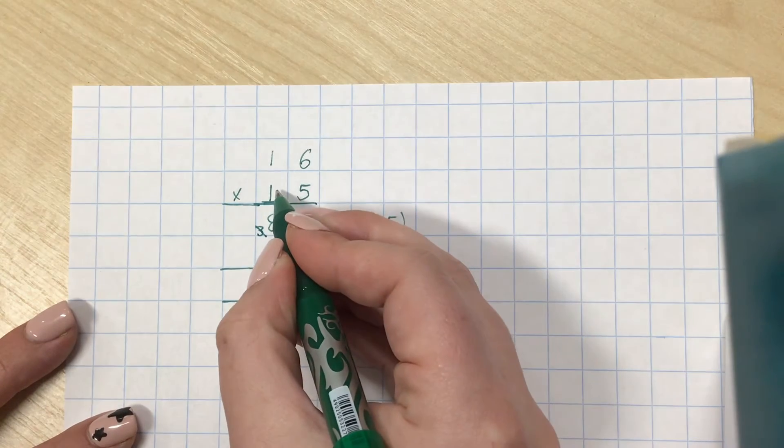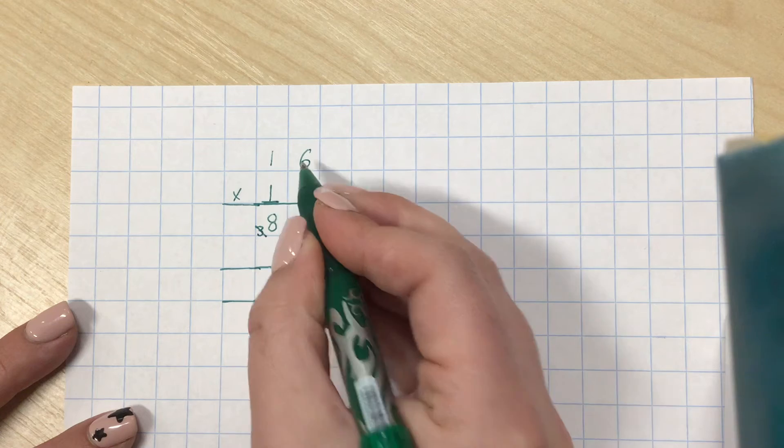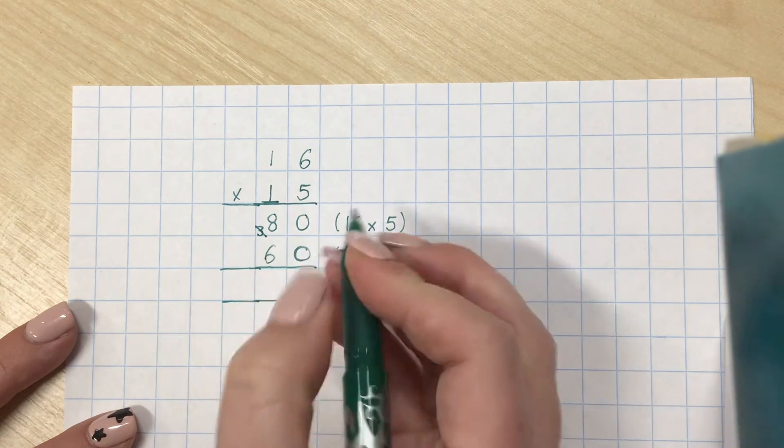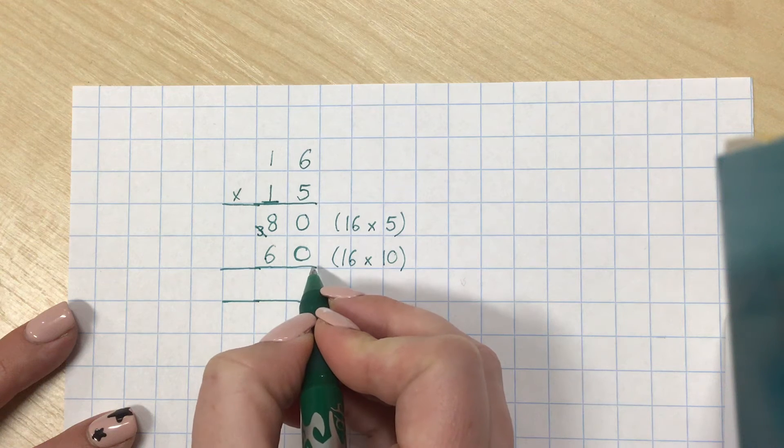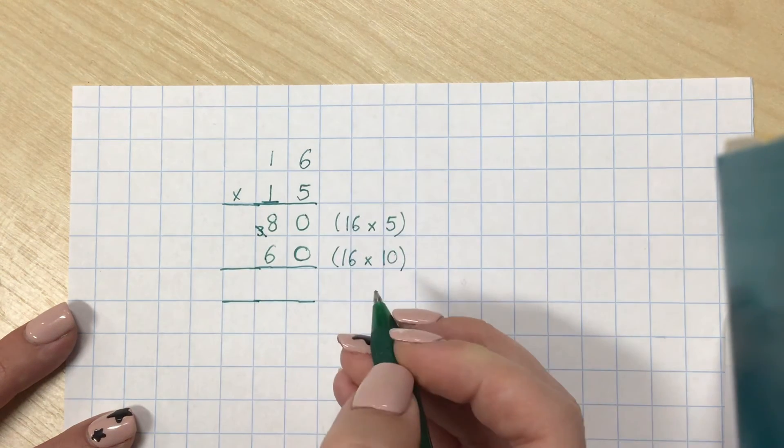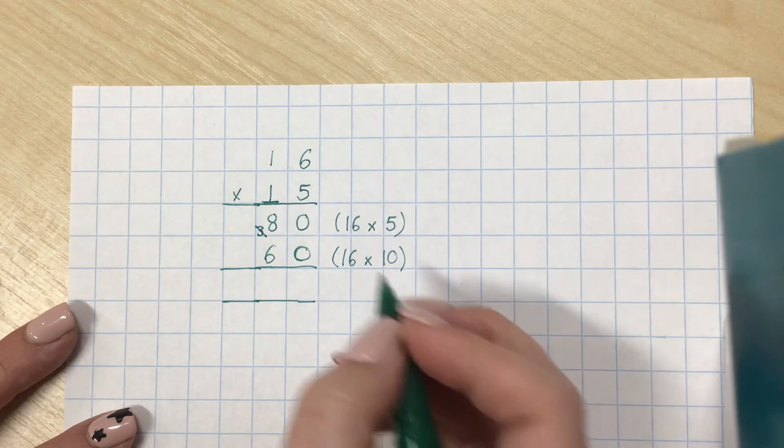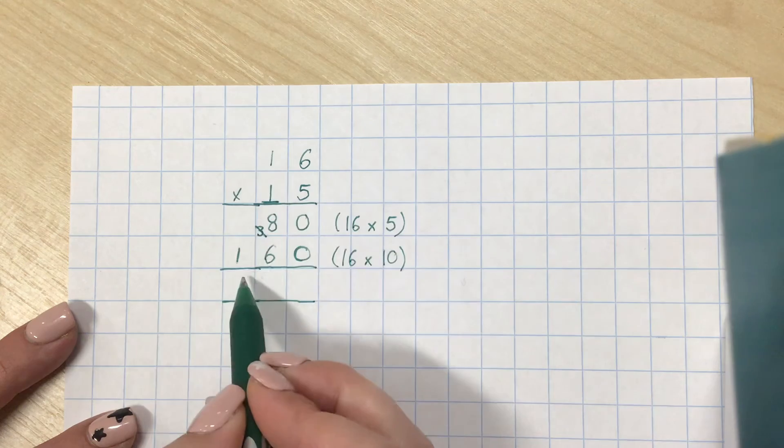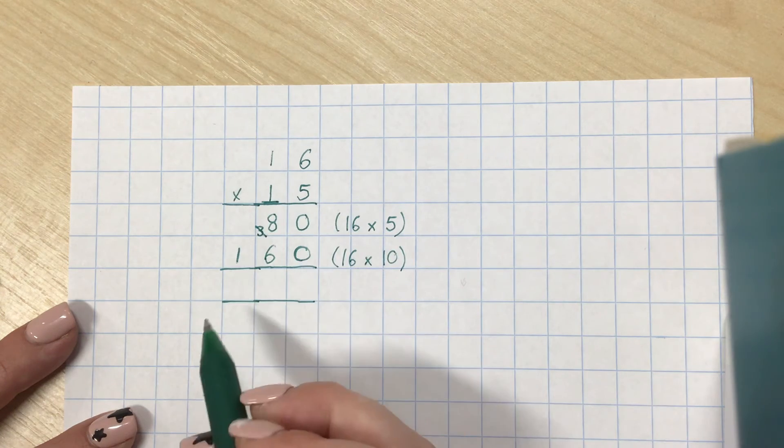Now, I can think about this as 1 times 6 instead of 10 times 6 because when I put that 6 in there, it becomes 60 because of the place value holder. And then, finally, 1 times 1 we know is 1, but it's actually 10 times 10. But because my 1 goes in my hundreds column, it has a value of 100.